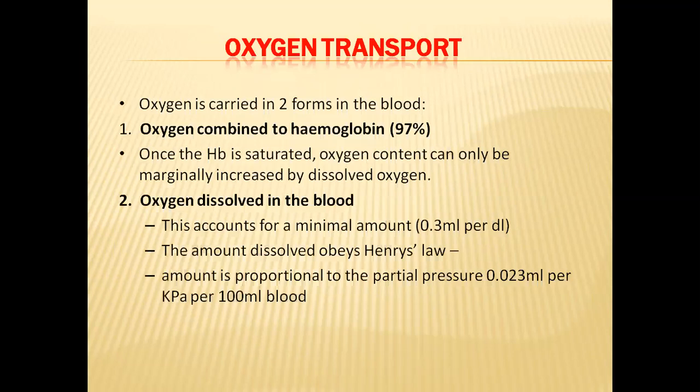Oxygen is carried through the blood in two forms. The first form is oxygen combined to hemoglobin — 97% of oxygen transport is made possible by this method. The second method is oxygen dissolved in the blood plasma — 3% of oxygen will be dissolved in blood plasma, since oxygen is a gaseous material and blood plasma contains water in which oxygen can dissolve. In the dissolved condition, 3% of oxygen is transferred from lungs to tissue. Mostly, 97% of oxygen is transported by combining with hemoglobin. When hemoglobin is bound to oxygen, it is called oxyhemoglobin.